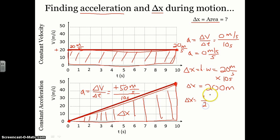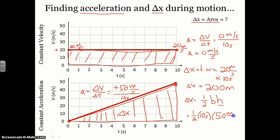Recall from geometry that the area of a triangle equals one-half times base times height. Looking at this specific triangle, we have one-half times the base of 10 seconds times the height of 50 meters per second. The seconds cancel, leaving us with one-half times 10 times 50. One-half times 10 is 5, and 5 times 50 is 250. So the object travels a total displacement of 250 meters in those 10 seconds.